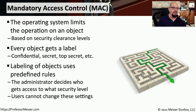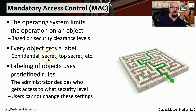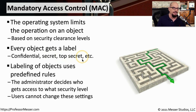With MAC, a user is assigned a minimum type of access. The administrator configures a particular user to have a particular access level — for example, secret access — and users don't get to change this. Now that this user has secret access, they may be able to access objects labeled confidential or secret, but they would not be able to access objects labeled top secret.